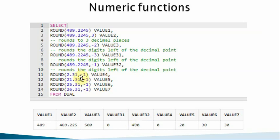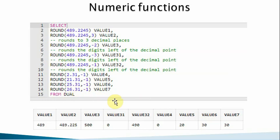For example, 2.31 with minus 1 returns zero since there's only one digit to the left. If I have 21.31 with minus 1, it rounds to 20. If I have 25.31 with minus 1, it rounds up to 30. Similarly, 26.31 with minus 1 also returns 30.